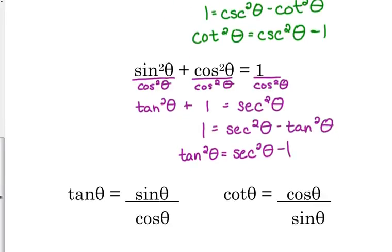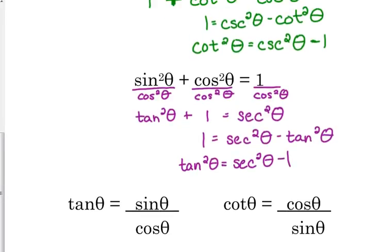I also put up here as reminders that tangent of theta equals sine over cosine, and cotangent is cosine over sine. Now we're going to actually prove some trig identities.